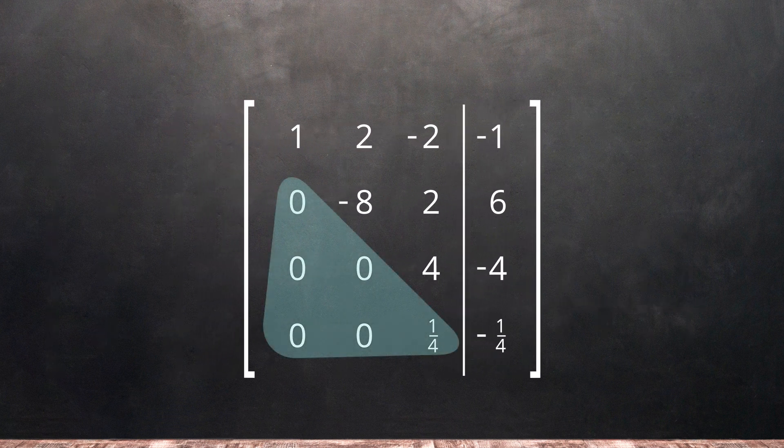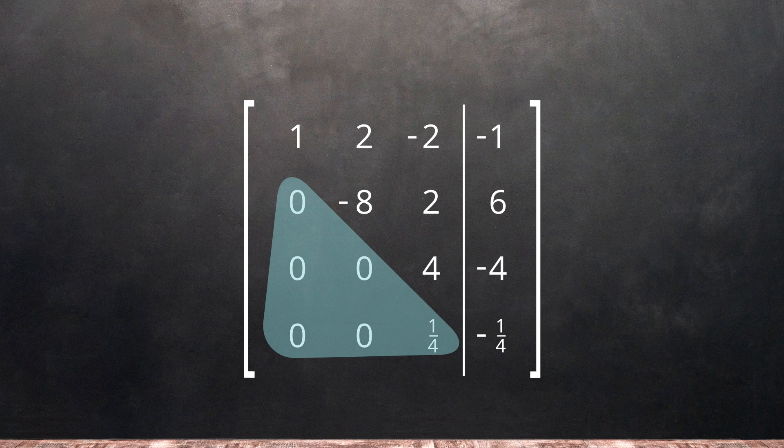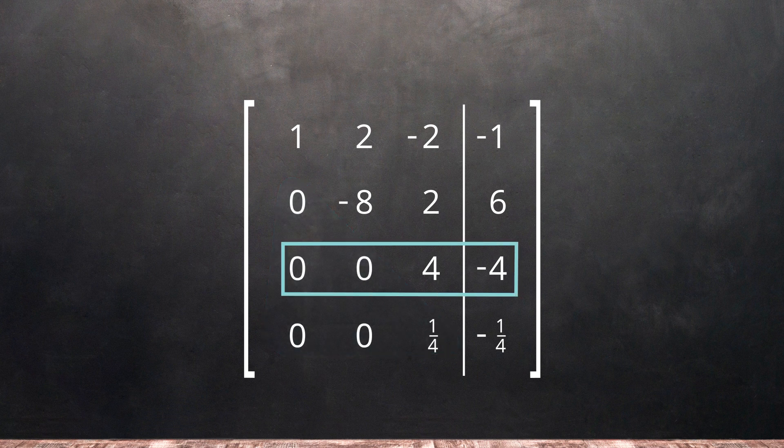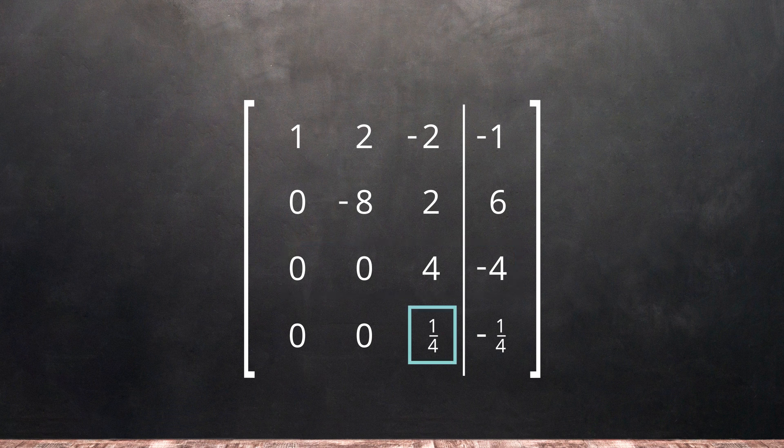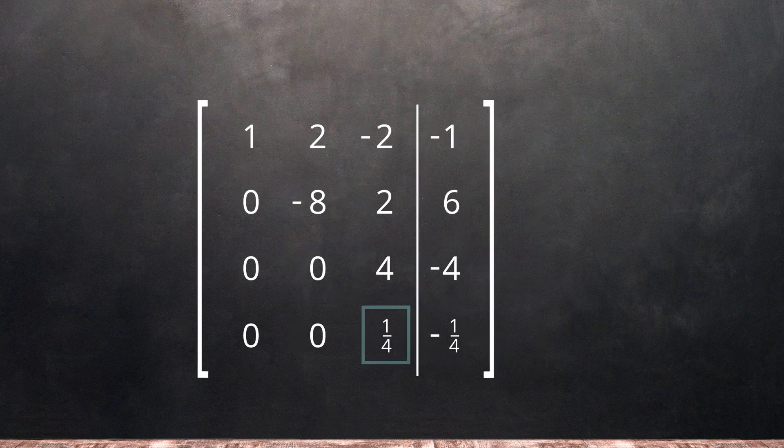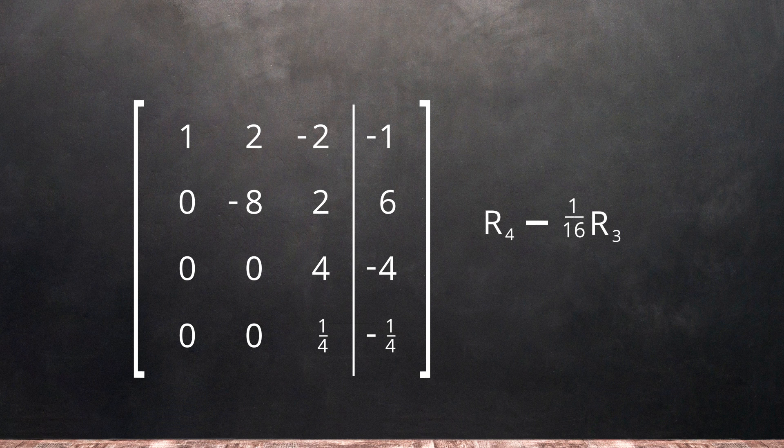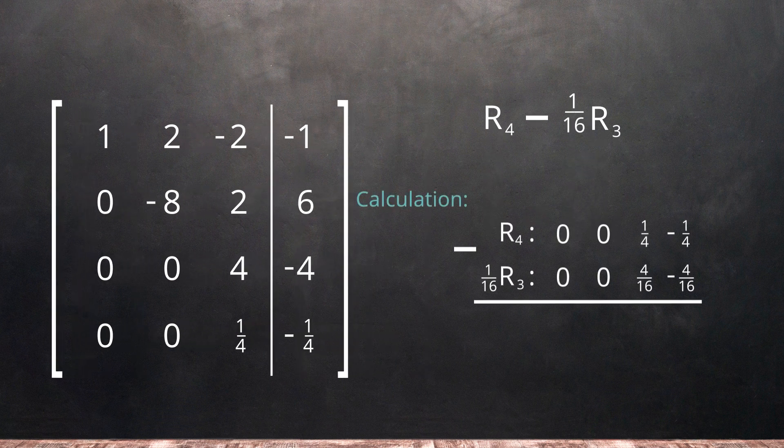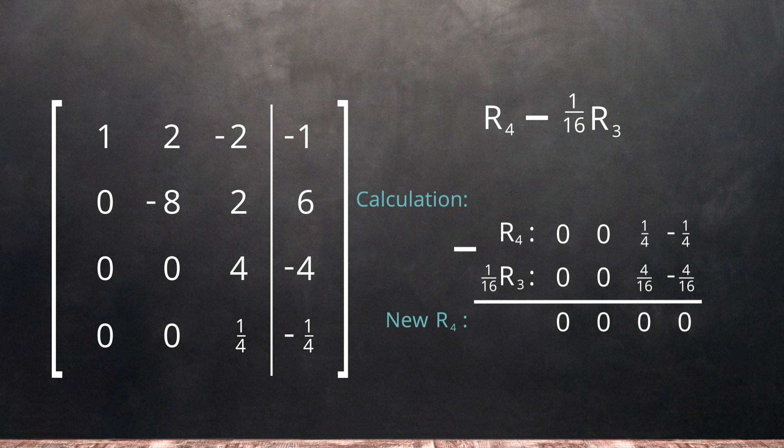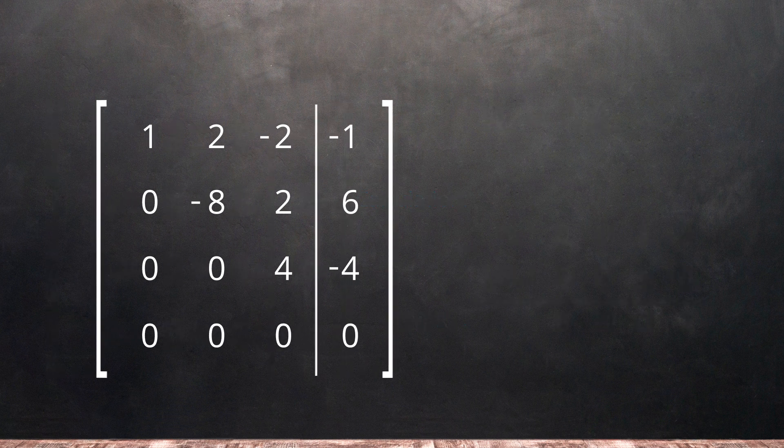We have one more entry to take care of in our lower triangle in the fourth row. We will use the third row as our pivot to do this. To change the 1 quarter in row 4 to a 0, we will subtract 1 sixteenth row 3 from row 4 and perform the calculations. To obtain our new row 4, we can rewrite our matrix.